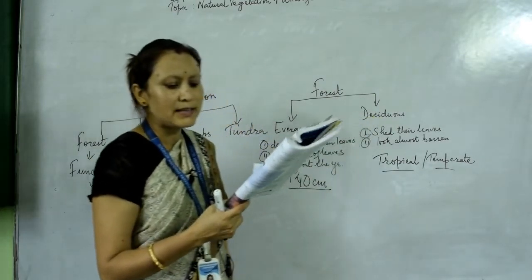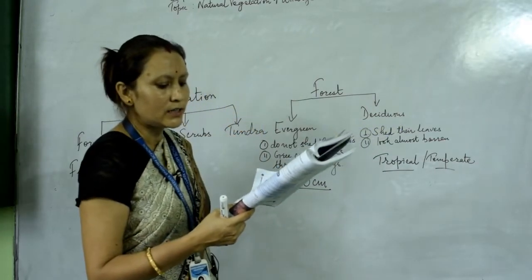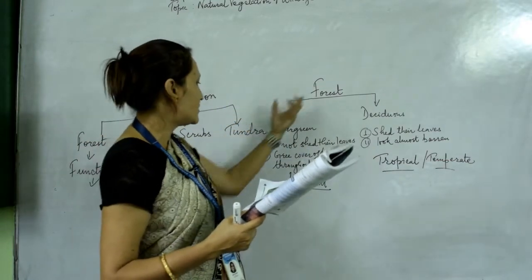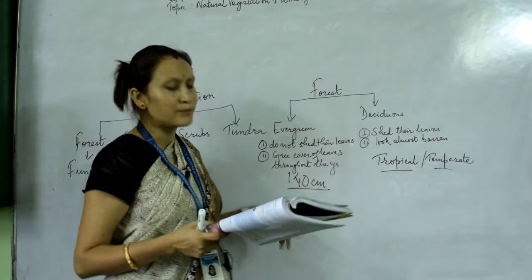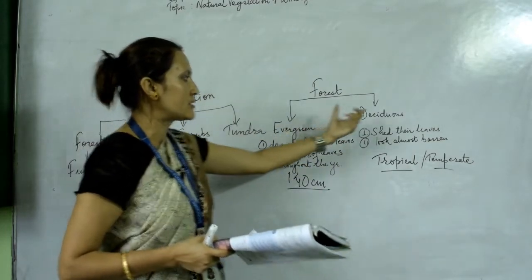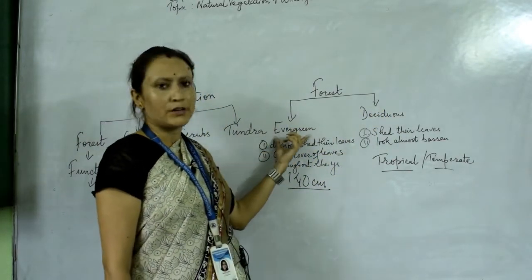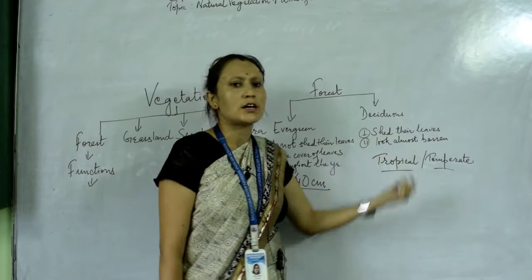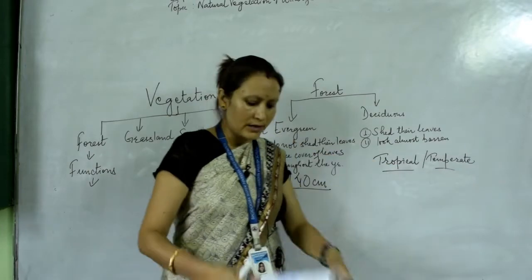Tropical forests are mainly found in South Africa and Australia. Temperate forests are found in north-central European areas, parts of Asia, and the United States. Evergreen forests are also found in the western ghats and the Himalayan belt. So the two important types of forest are evergreen forest, which do not shed their leaves and stay green throughout the year, and deciduous forest, which shed their leaves and look almost barren.